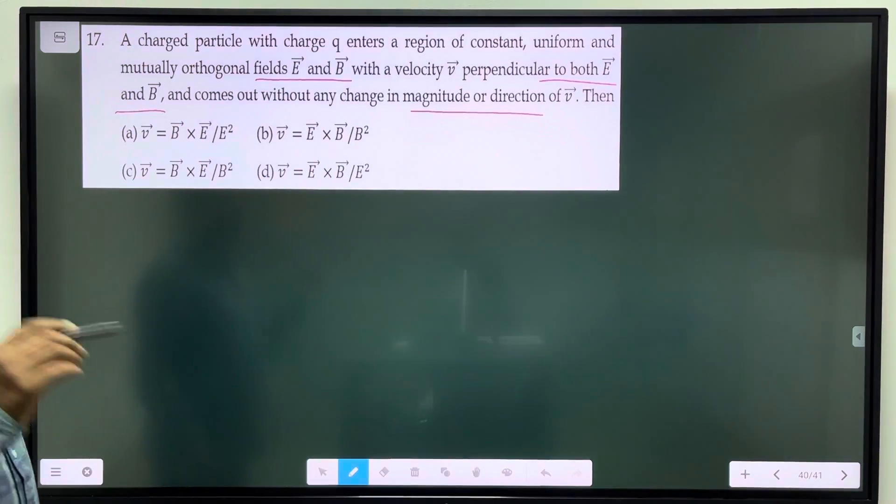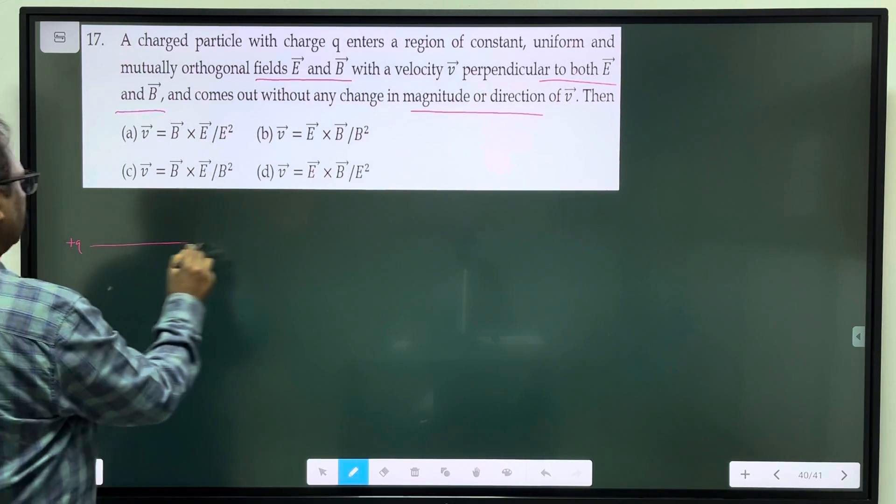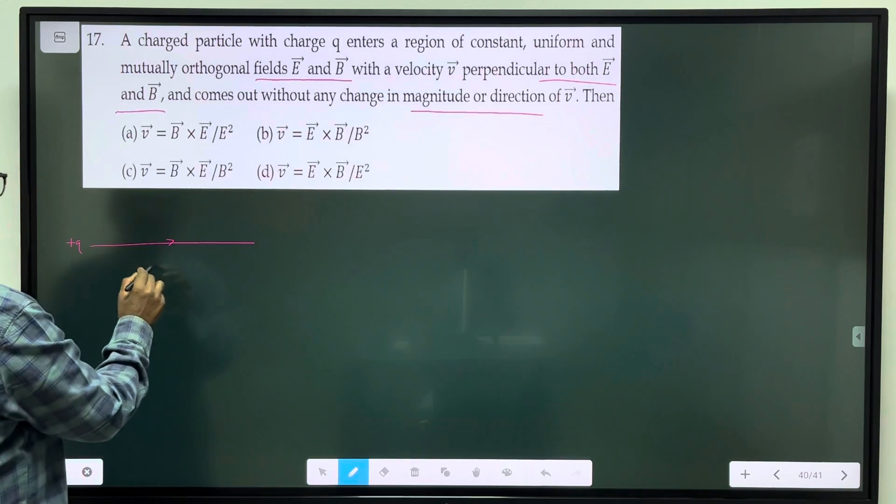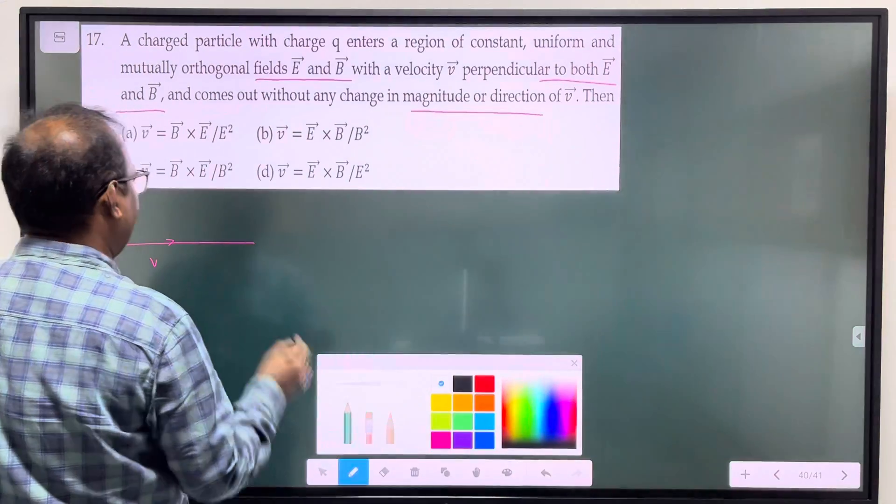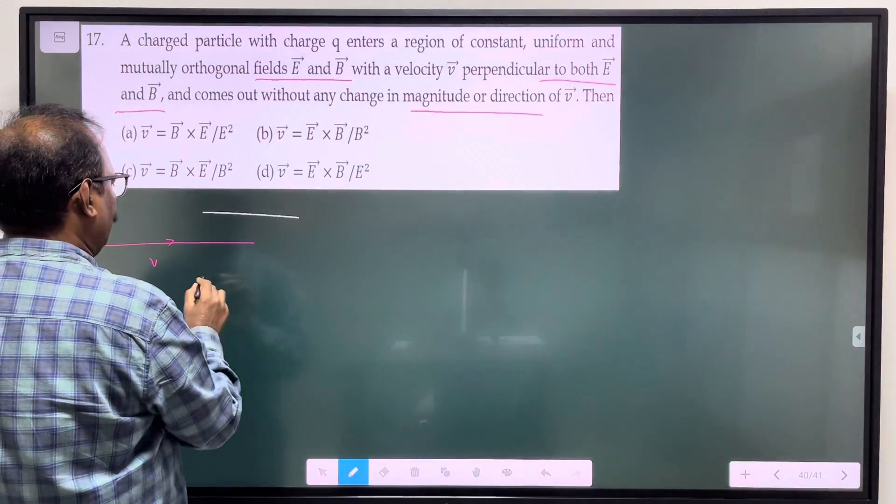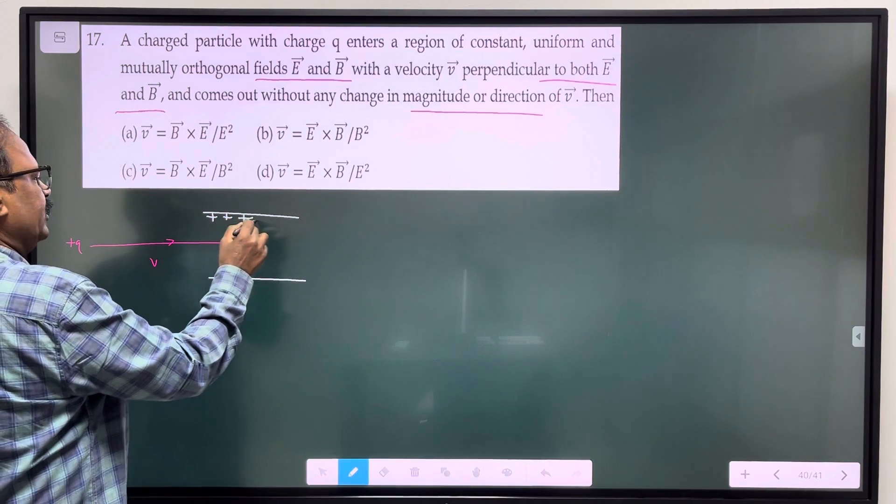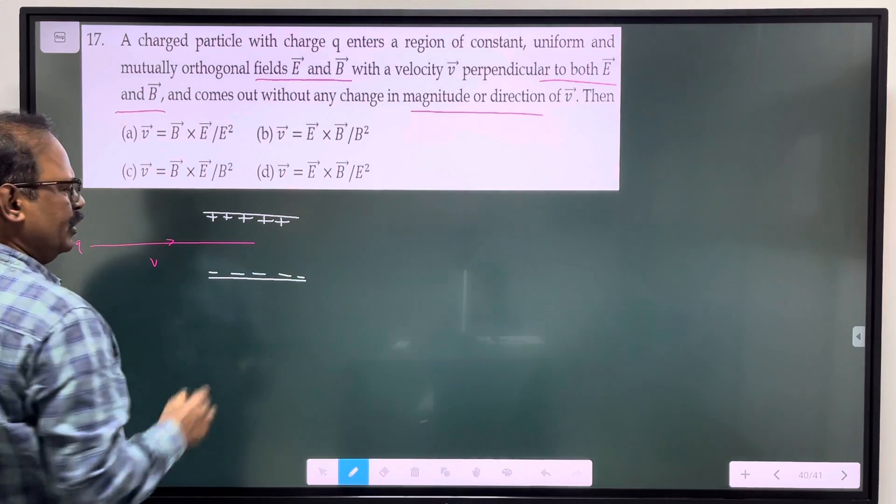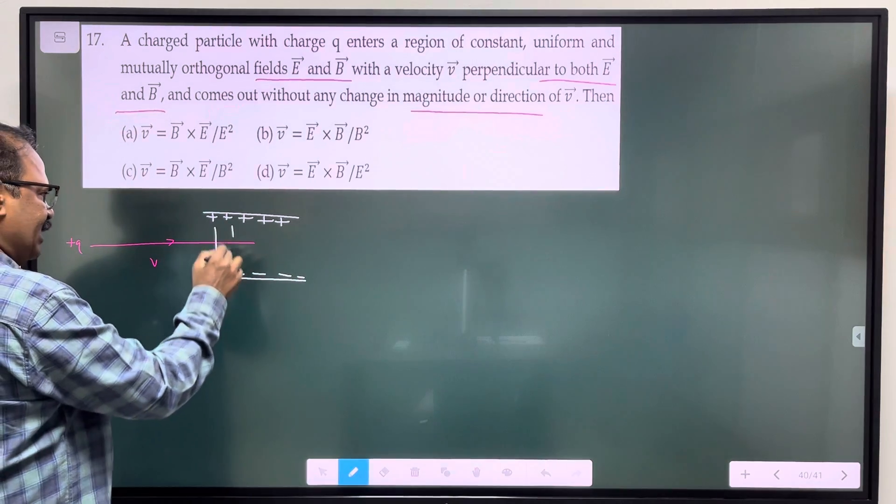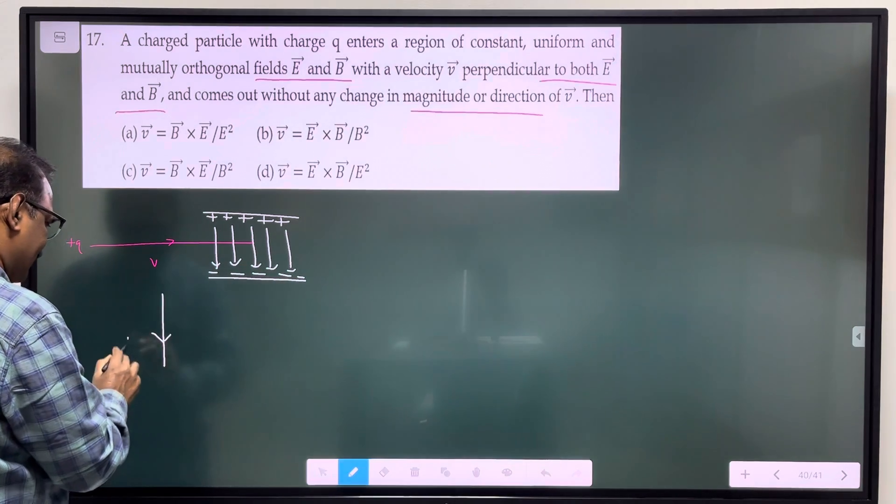Okay, let's review some fundamentals. If the charge q is going like this, with velocity v, and the electric field is here between two plates, one positively charged plate and one negatively charged plate.